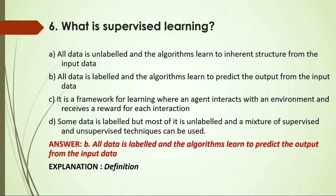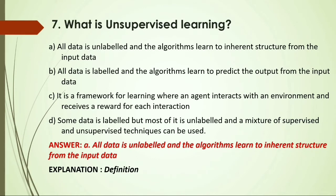MCQ: What is unsupervised learning? Options: A) All data is unlabeled and the algorithm learns to inherit structure from input data; B) All data is labeled and the algorithm learns to predict output from input data; C) A framework where an agent interacts with the environment and receives a reward in each interaction; D) Some data is labeled but most is unlabeled and a mixture of supervised and unsupervised techniques can be used. Answer: A, all data is unlabeled and the algorithm learns to inherit structure from input data, because this is the definition of unsupervised learning.